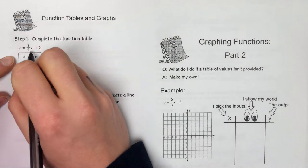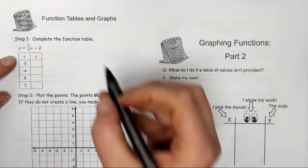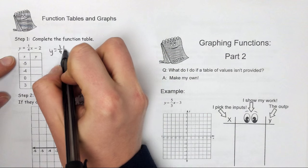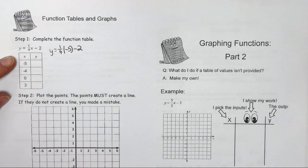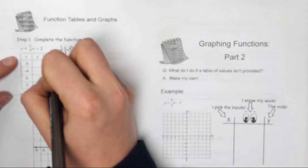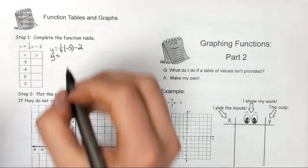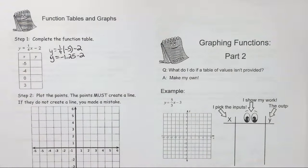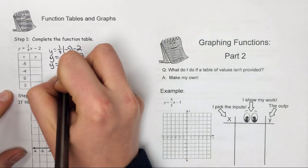We're going to replace everywhere we see x with the x value. So this is going to give us y equals 1/4 times negative 5 minus 2. If I plug that into my calculator, I do the multiplication first. So 1/4 times negative 5 gives me negative 1.25 minus 2. My y value is going to be negative 3.25.